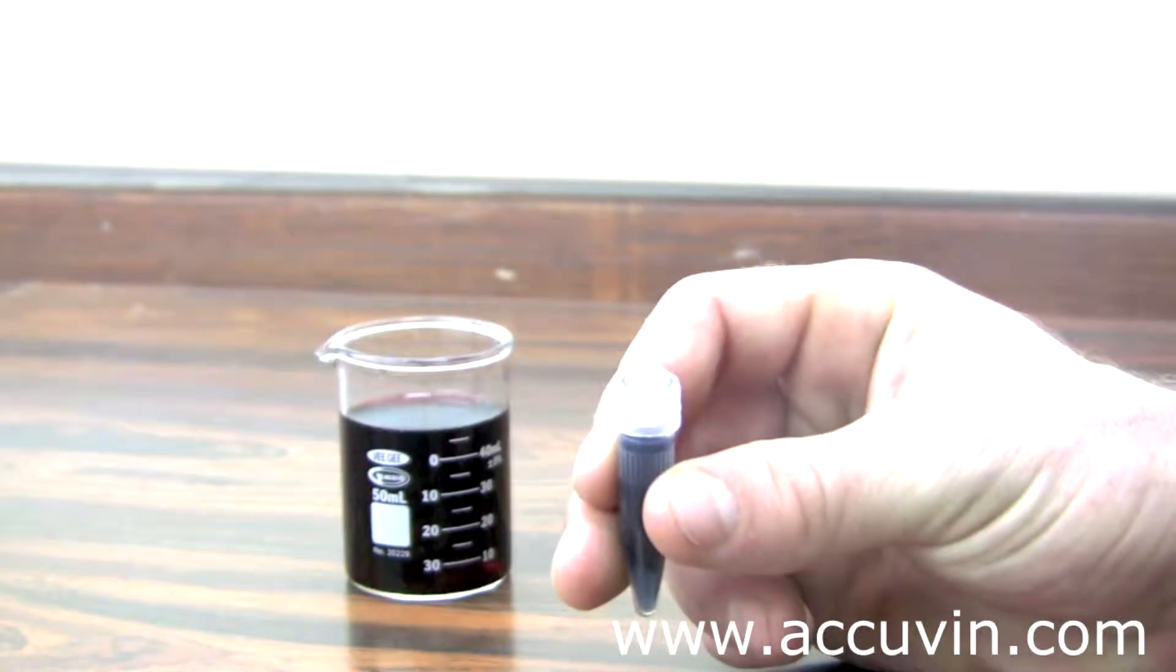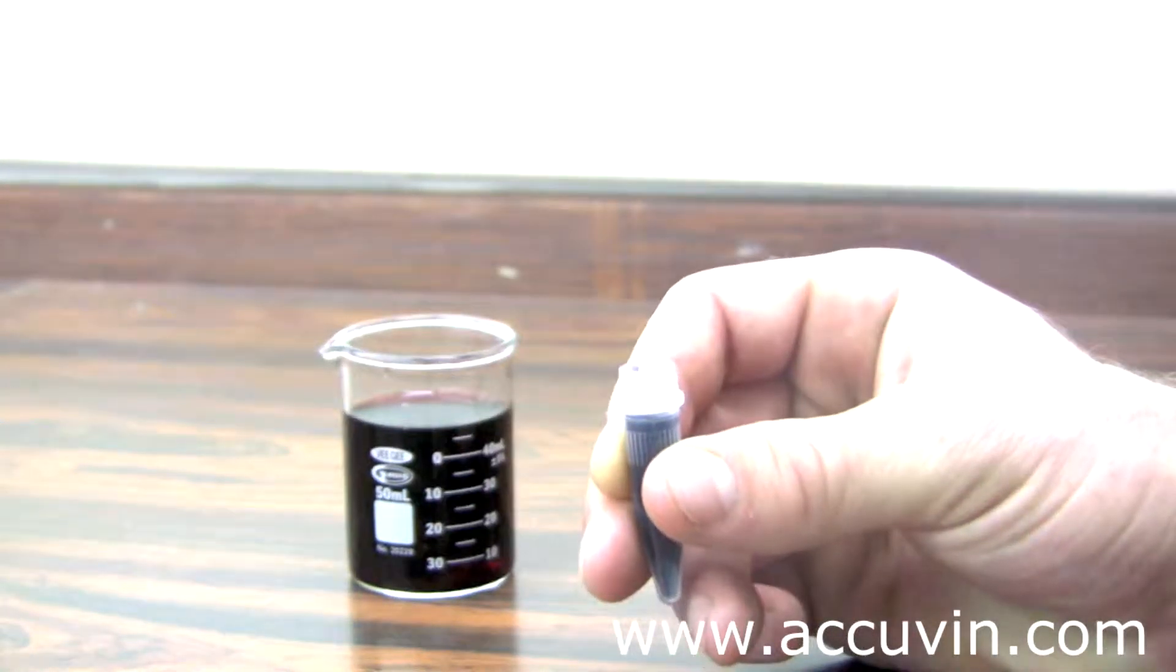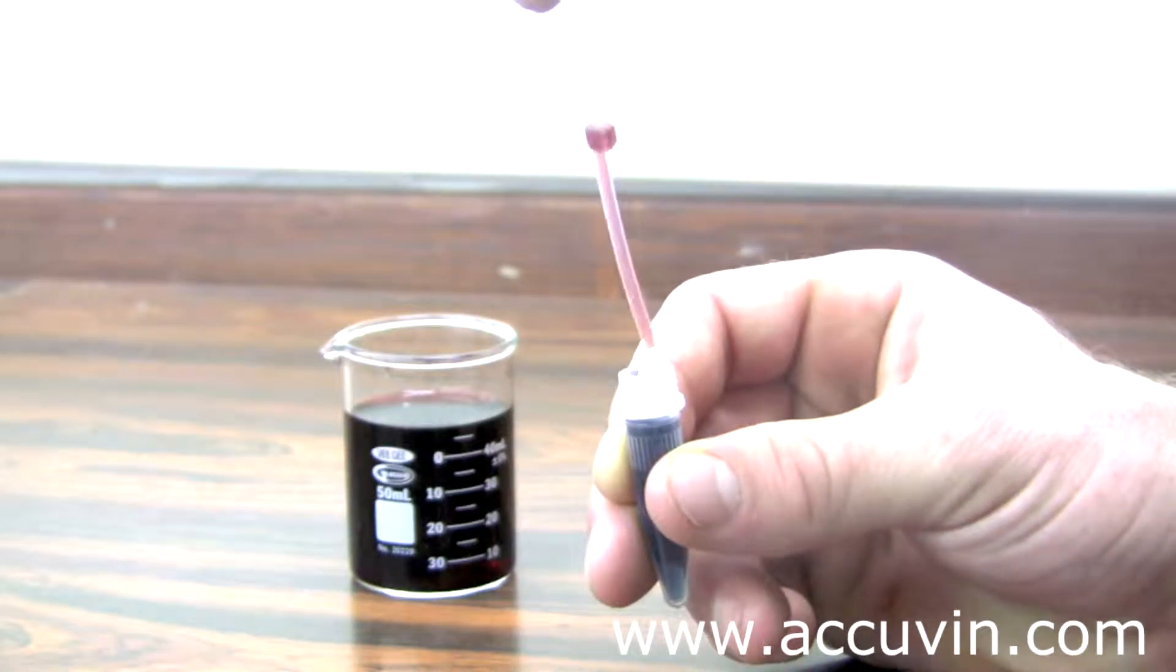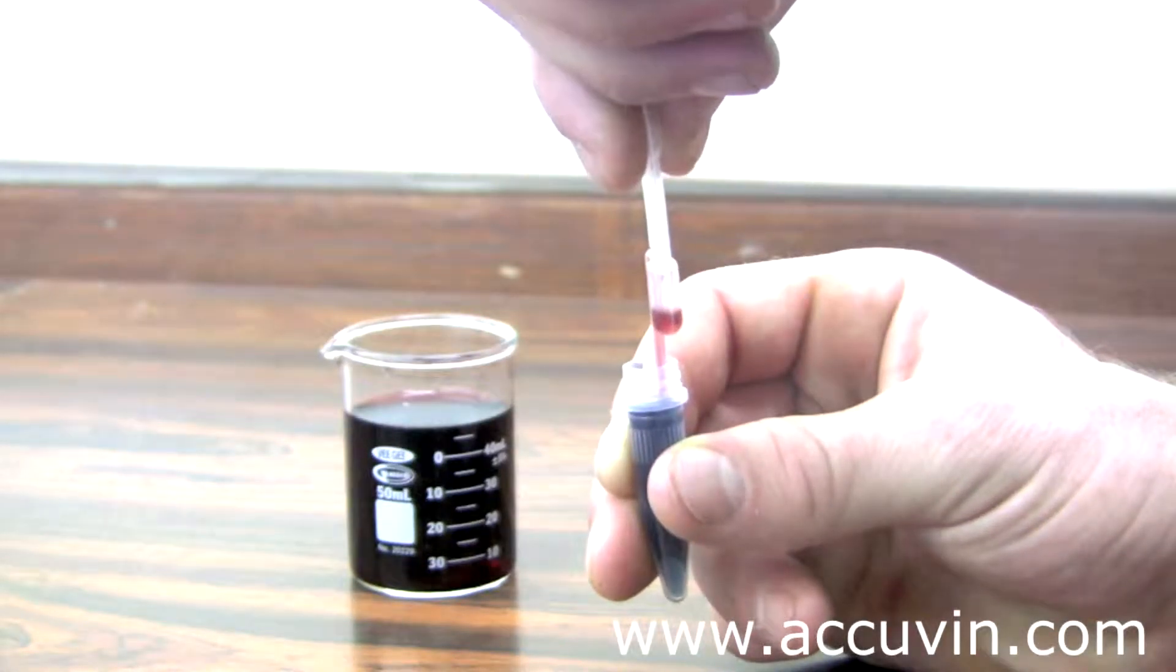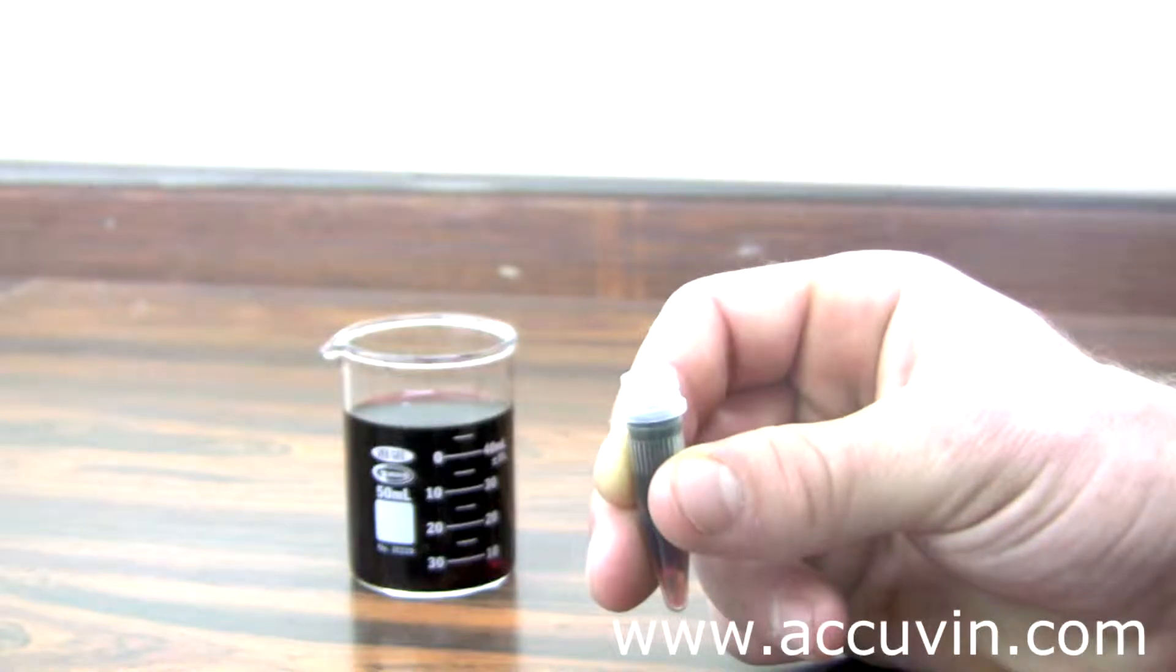Next, take your reagent tube and remove the cap. Then take your sampler and put the tip of your sampler into the tube and press the fill bulb. While still holding the fill bulb, pull the sampler out and release.